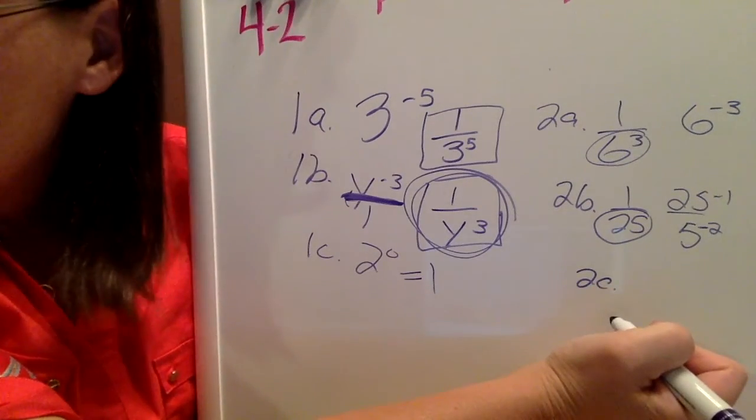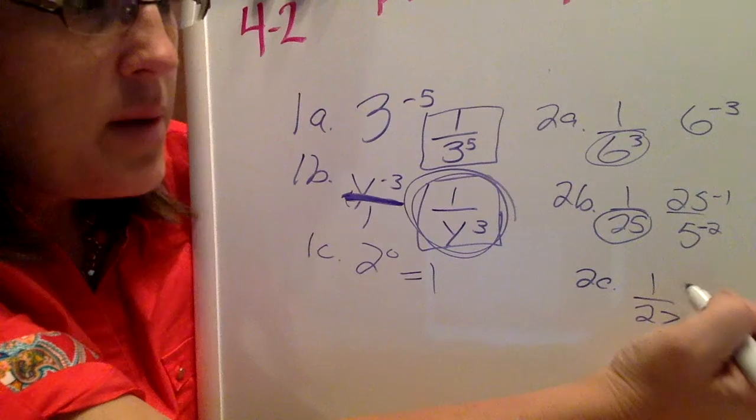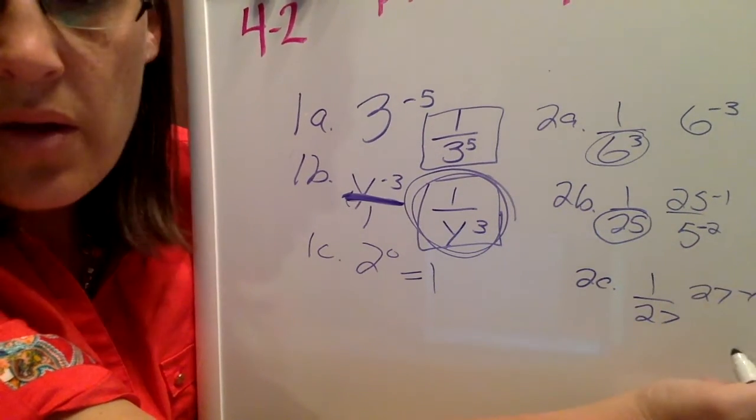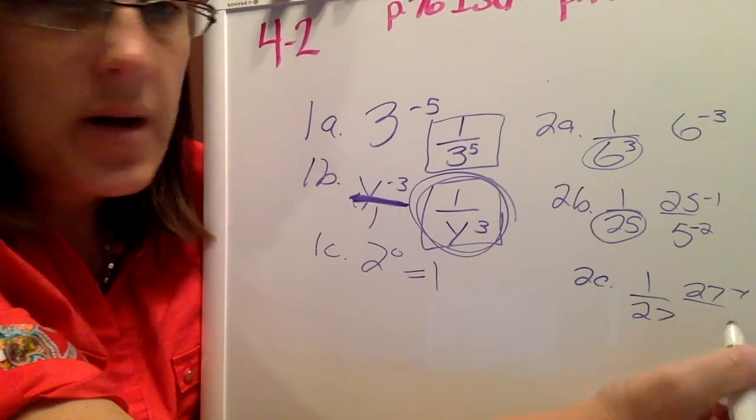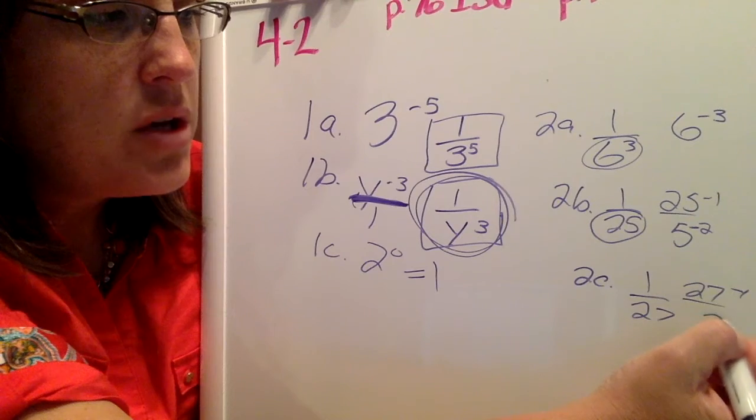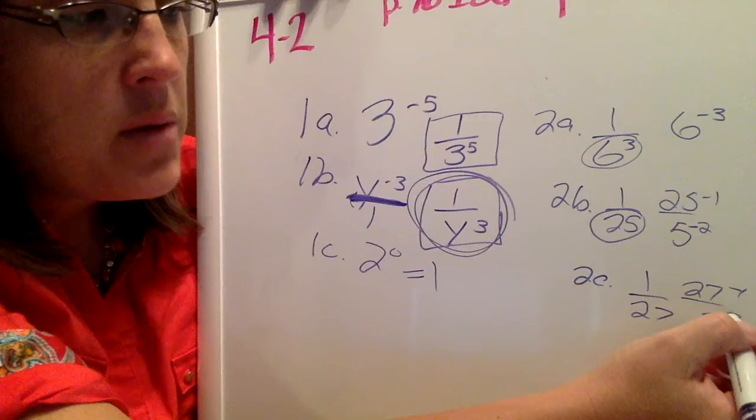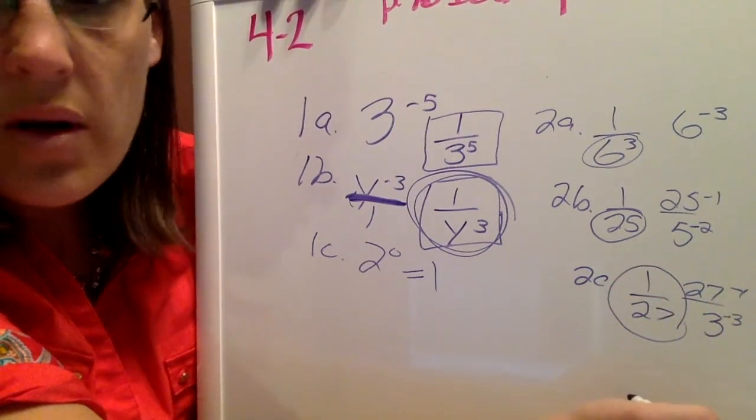And then finally, 2c is 1 over 27. Again, you might be thinking, oh, it's 27 to the negative 1 power. But we're going to try to use an exponent other than negative 1. Since 27 is not a perfect square, I'm going to try a cube. And 3 cubed happens to be 27. But it would have to be 3 to the negative 3 in order for us to end up at 1 over 27.